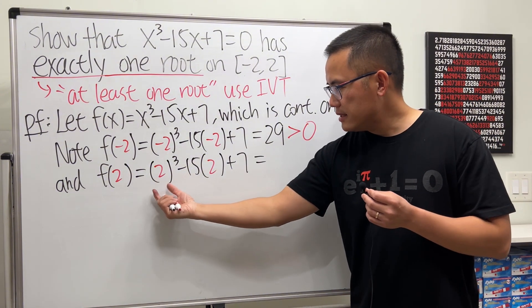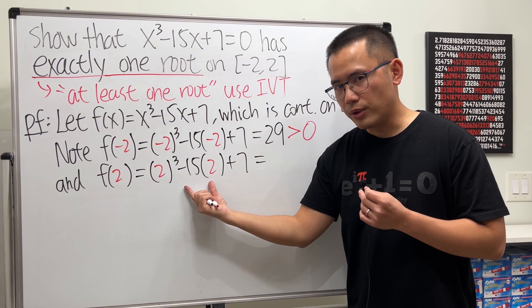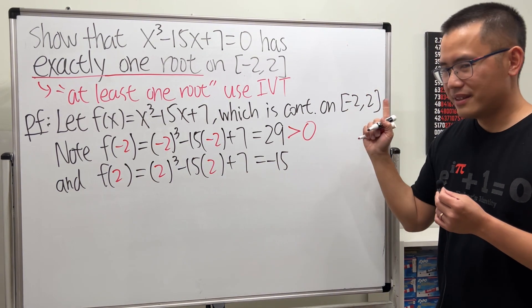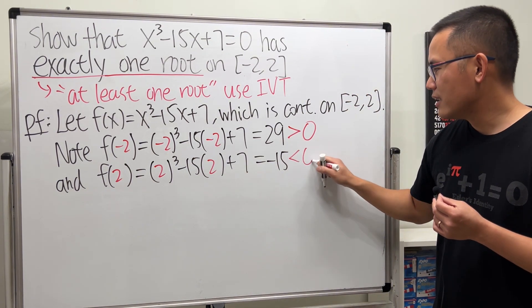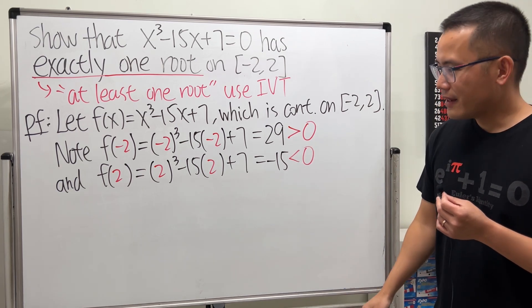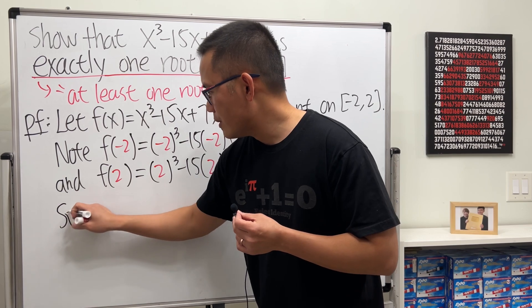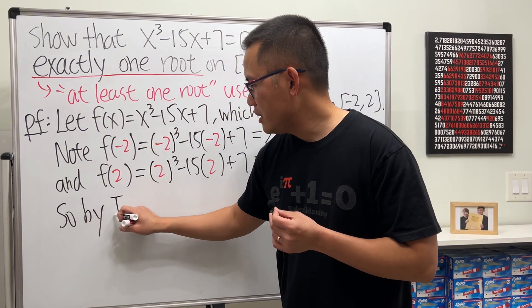f of 2 is... that's 8 minus 30 which is negative 22 plus 7. Aha, it is negative: negative 15, and let's mention that being less than zero.